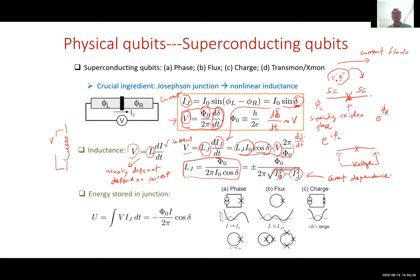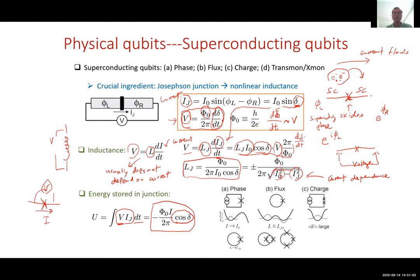The energy stored in the Josephson junction is basically the power — voltage times current — integrated over time. You find that this is proportional to the cosine of the phase difference. The detailed derivation is not critical; we'll take this as the starting point for the energy discussion.